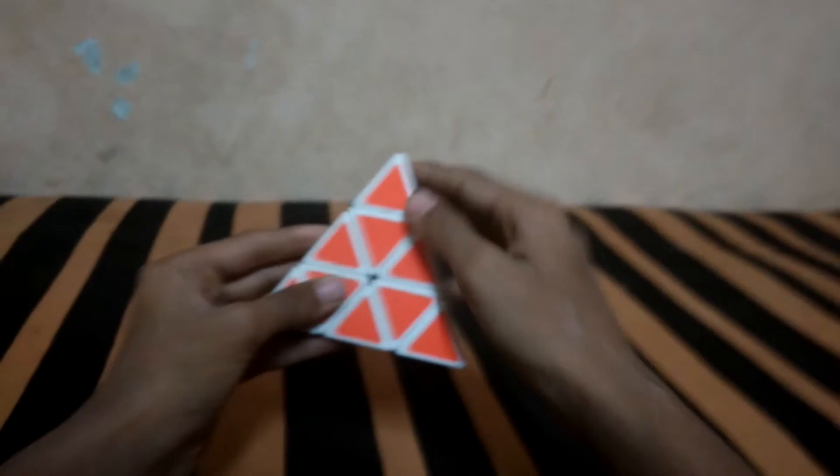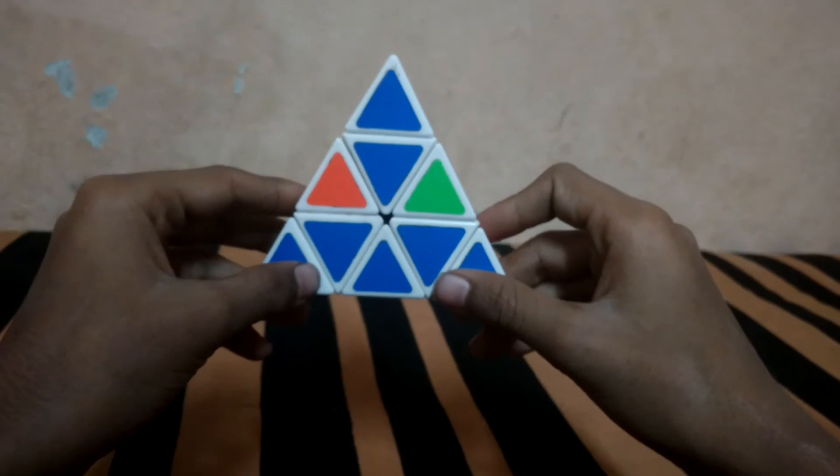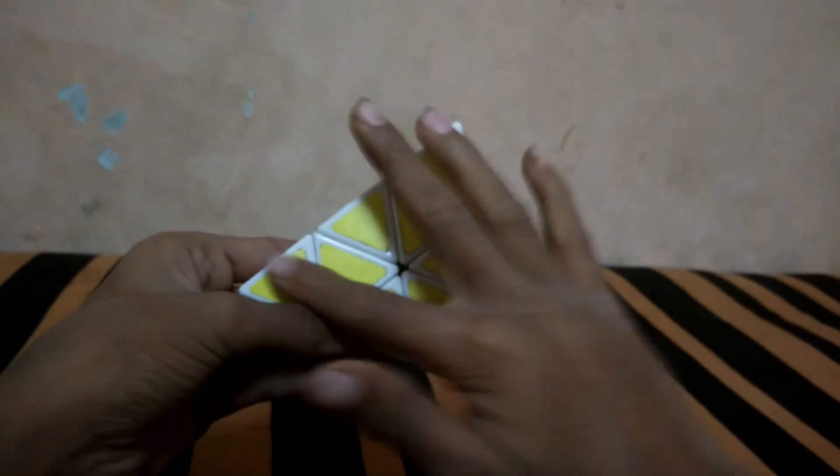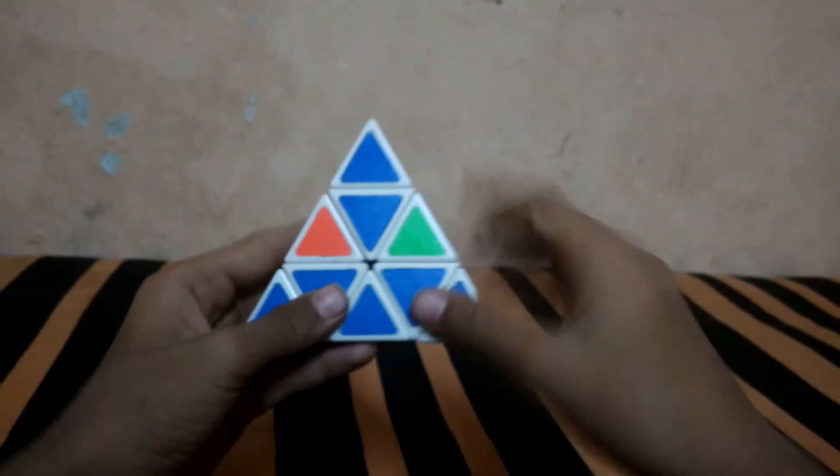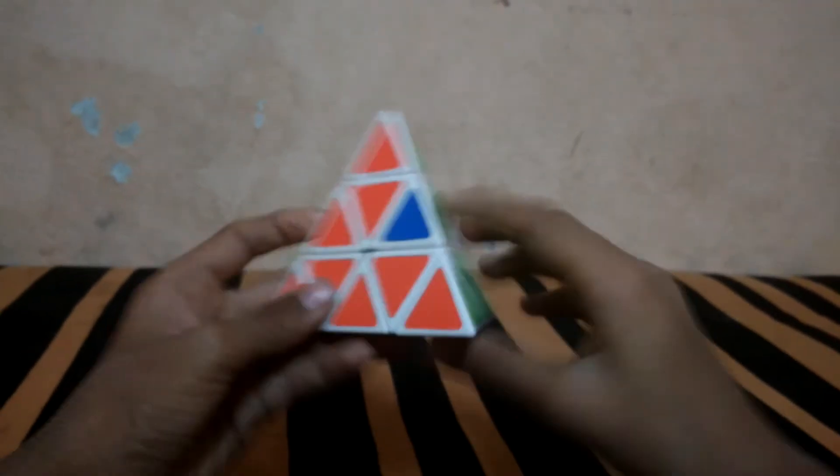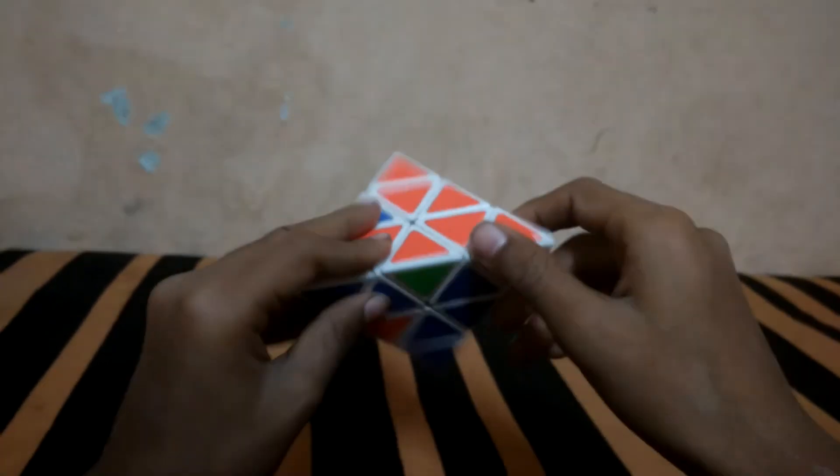Sometimes the yellow is finished, and the case is like this. When the edges are not aligned properly, take the color which is nearly complete.